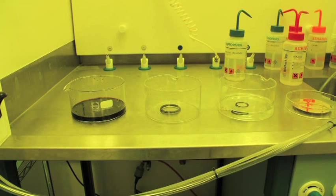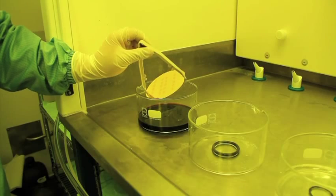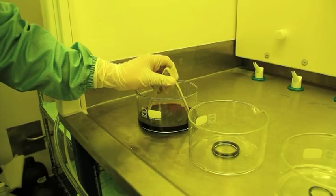To etch a gold layer on a wafer, as shown in this example, three bowls are used: one of gold etch, one of deionized water, and an empty bowl for rinsing.